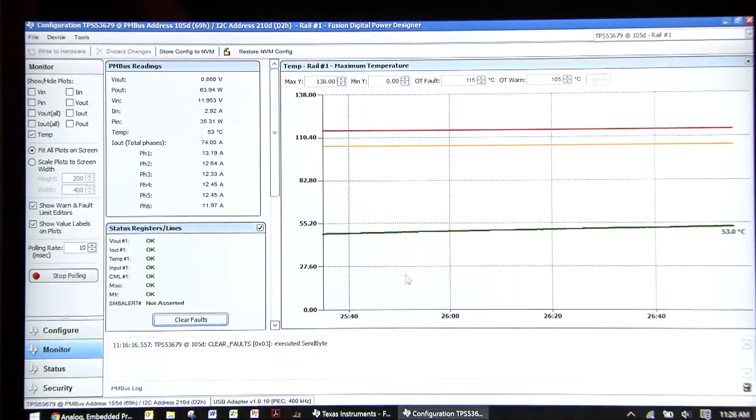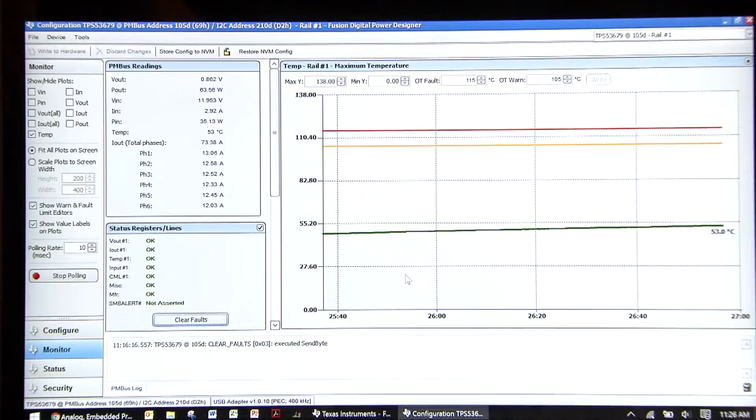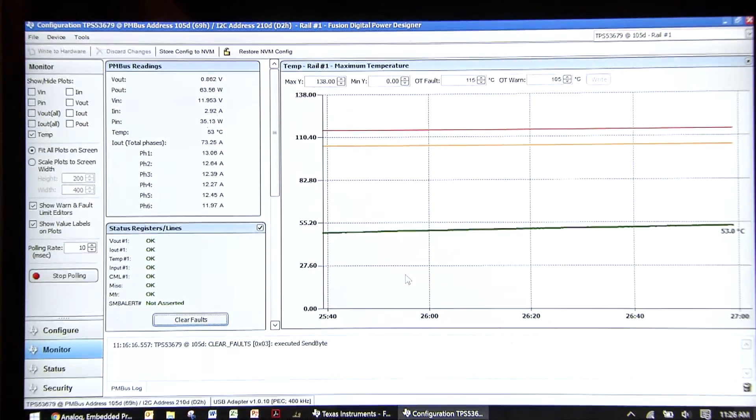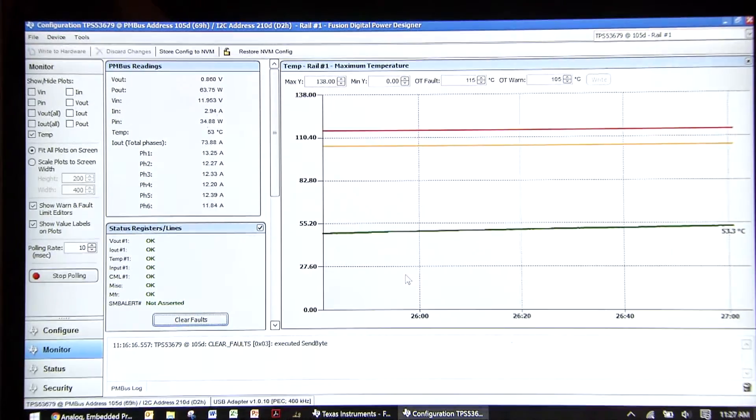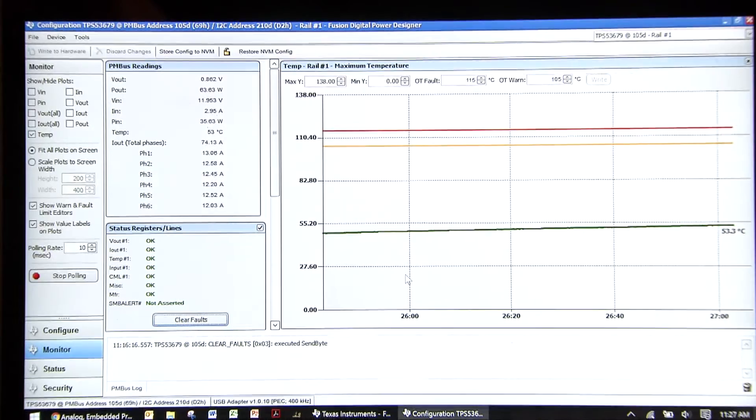As an added bonus, the GUI also reports the individual phase currents as well, so you can see that all six phases are balanced nicely. Having the board on the bench with no heat sinking or airflow is a worst-case scenario, and in most high-powered applications there's a fan present and sometimes a heat sink over the FETs and inductors.